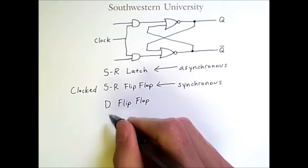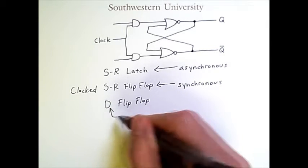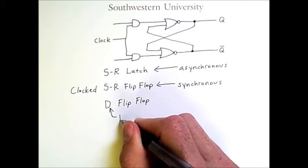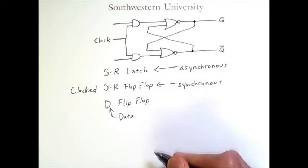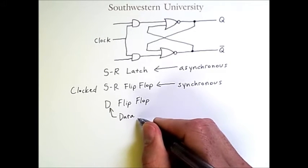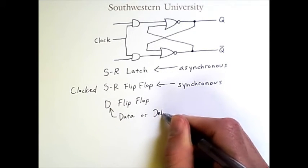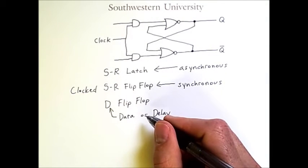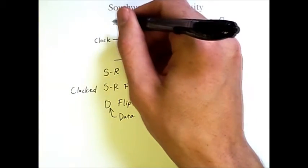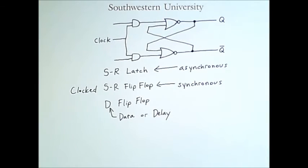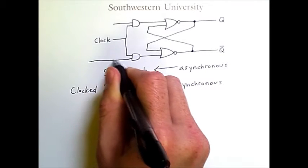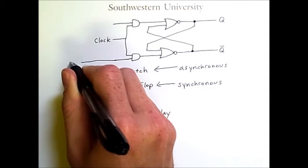Now, this D can have different meanings. It can be interpreted as meaning data or it can be interpreted as meaning delay. Now, the D flip-flop solves the double 1 problem of the SR latch and flip-flop by only having a single input, and that single input is D.